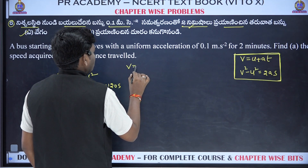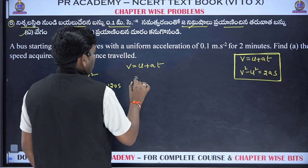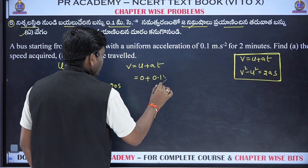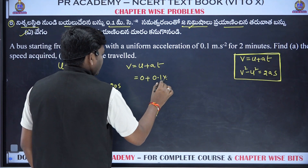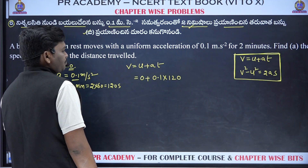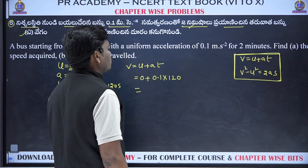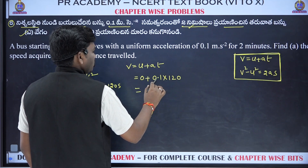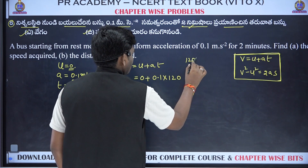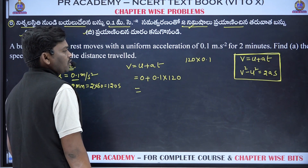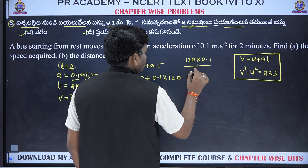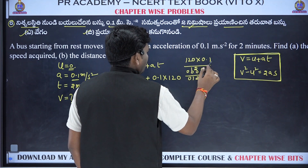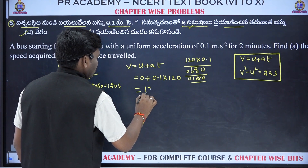The first formula is v equals u plus at. Here, u equals 0, a equals 0.1. We take 0.1 into 120. The answer is 12 meters per second.